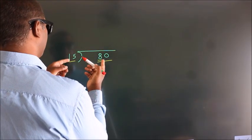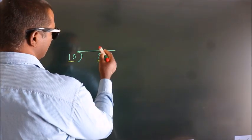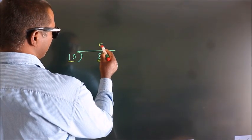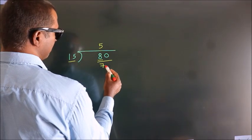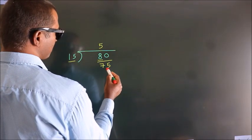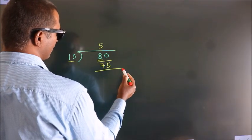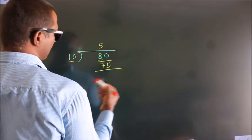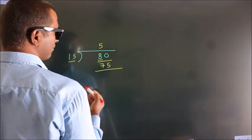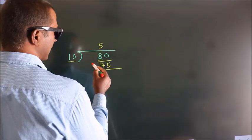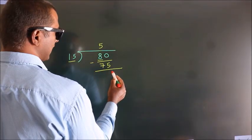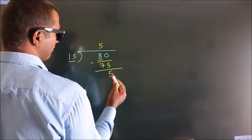In the 15 times table, 15 fives are 75. Now, we should subtract. We get 5.